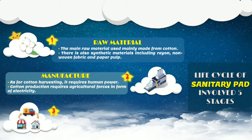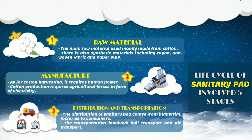For the third stage, it is on distribution and transportation of sanitary pad. The distribution of sanitary pad comes from industrial factories to consumers. The transportation involved includes rail transport and air transport.